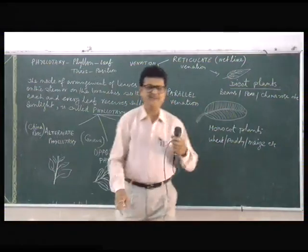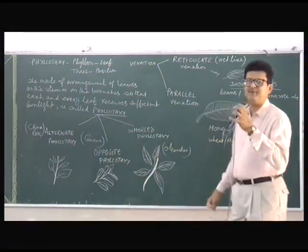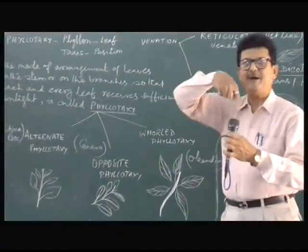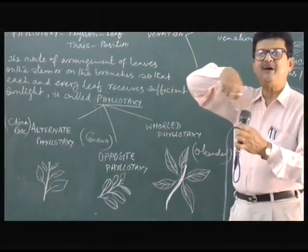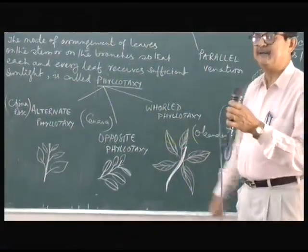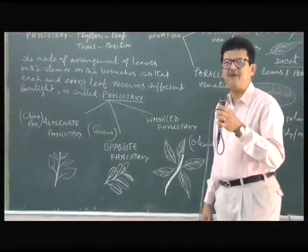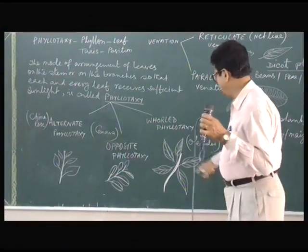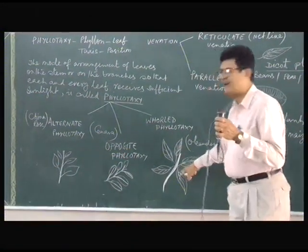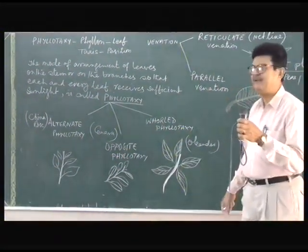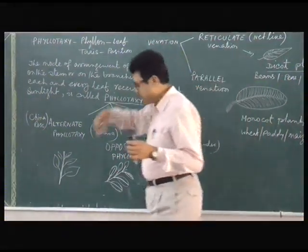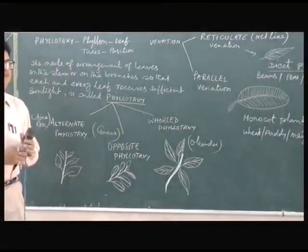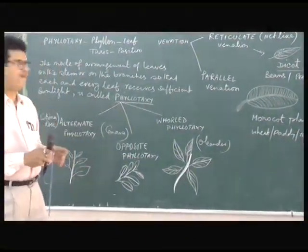Flowers are actually modified leaves — floral leaves are actually modified leaves. They are also arranged in a whorled manner, hence parts of a flower are known as whorls of the flower. So whorled phyllotaxy is also seen in flowers. Phyllotaxy is the arrangement of leaves on the branches and stem.